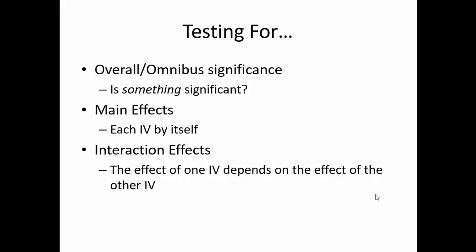In a two-way ANOVA, we can not only see if the mean differences are significant, but also the interaction between the two independent variables. The effect of one independent variable may depend on the effect of the second independent variable.